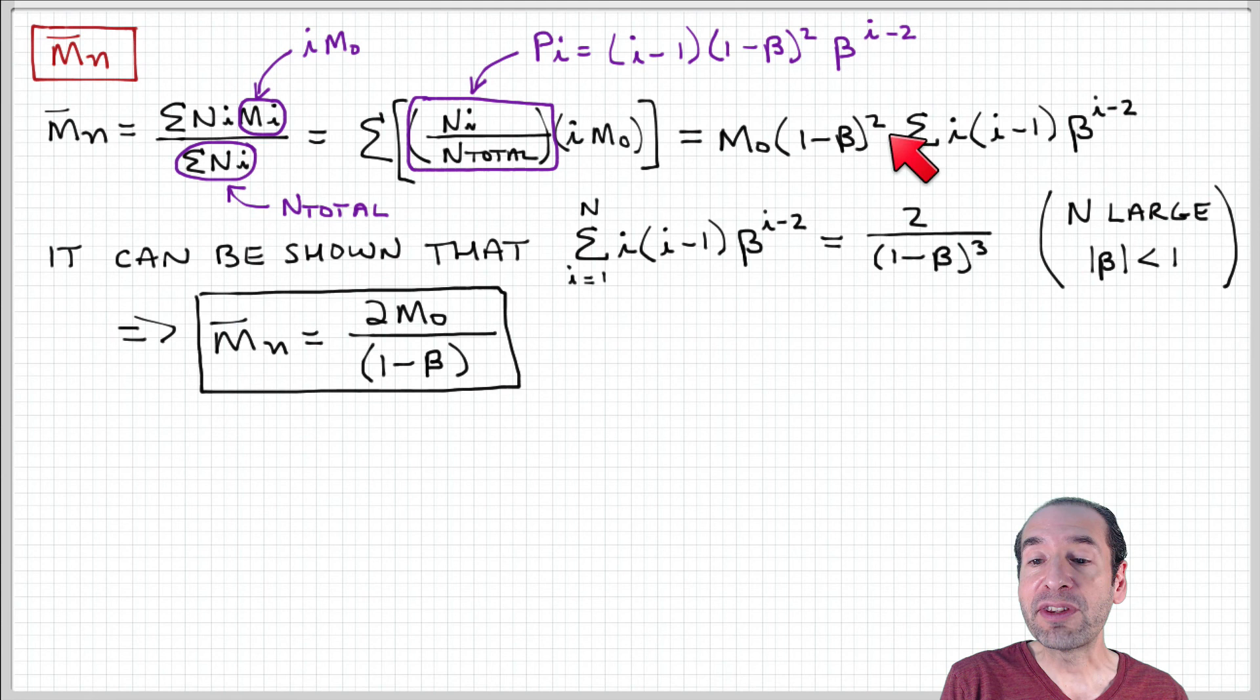So then I can just plug that into this product, and what I end up with is that the number average molecular weight is 2 times the monomer molecular weight over 1 minus beta for combination termination.